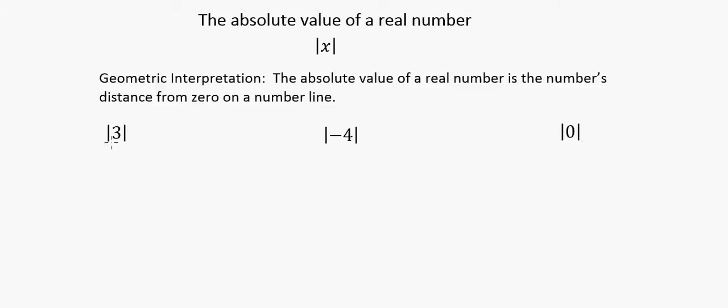So here we go with open absolute value 3, close absolute value. Now, using the geometric interpretation, we draw ourselves a number line. And my number line's a little crooked here. Maybe we can do better on the next one.